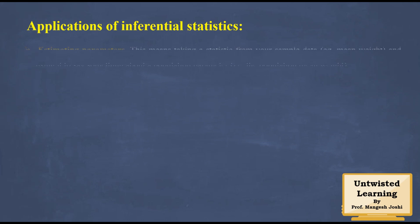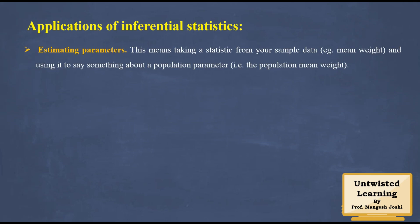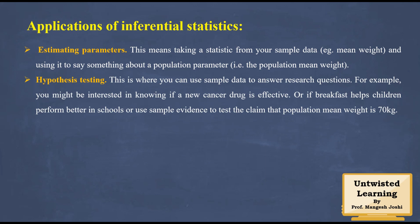The applications of inferential statistics: first is estimating parameters — this means taking a statistic from your sample data, for example measuring the mean weight, and using it to say something about the population parameter, that is the population mean weight. Second is hypothesis testing, where you use sample data to answer research questions, such as whether a new cancer drug is effective, or if breakfast helps children perform better in school, or testing the claim that the population mean weight is 70 kg.